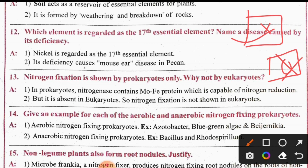In prokaryotes, nitrogen fixation involves a MoFe protein which is capable of nitrogen reduction. This nitrogen reduction is carried out by the enzyme nitrogenase. Mo stands for molybdenum and Fe stands for iron. This nitrogenase enzyme is only present in prokaryotes and is absent in eukaryotes.